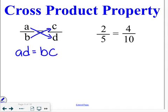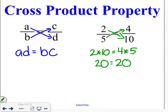So, you are multiplying across. If we are looking at the example on the right, we know that those two are equal. To double check that, you are able to use the cross product property. So, 2 times 10 is equal to 4 times 5. 20 is equal to 20.